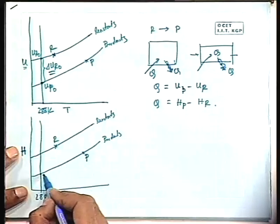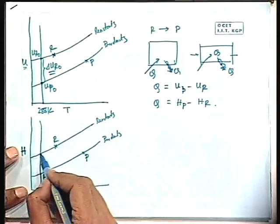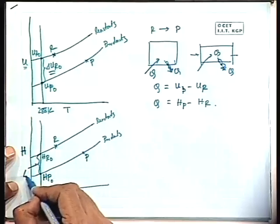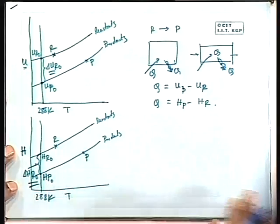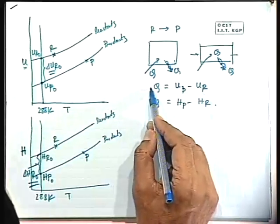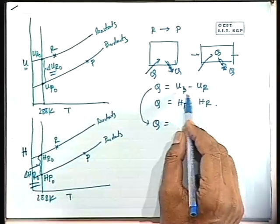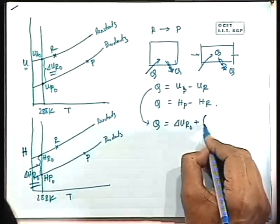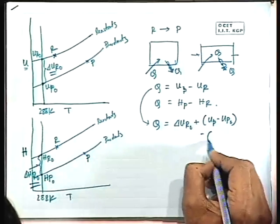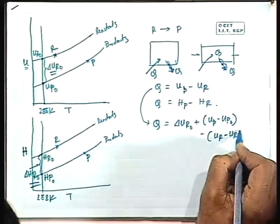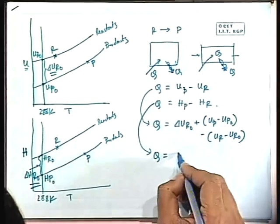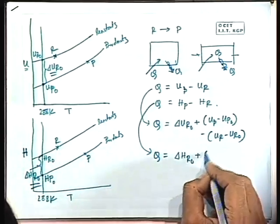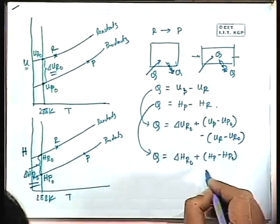Similar is the case for enthalpy. If we designate the enthalpy of the product at standard temperature as H_P0 and that of the reactant as H_R0, then this difference ΔH_R0 is the enthalpy of reaction. This is usually written in terms of enthalpy of reaction by subtracting and adding U_P0 and U_R0 accordingly, so one can write: Q = ΔU_R0 + (U_P − U_P0) − (U_R − U_R0). Similarly, by the same algebraic approach, subtracting and adding the initial state enthalpy values, we can write: Q = ΔH_R0 + (H_P − H_P0) − (H_R − H_R0).